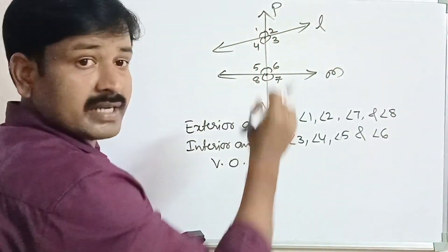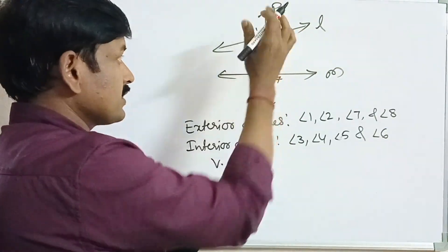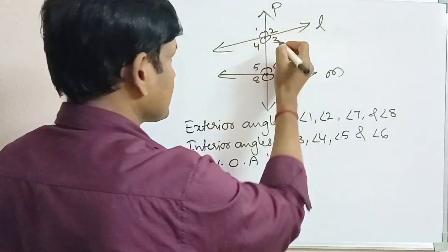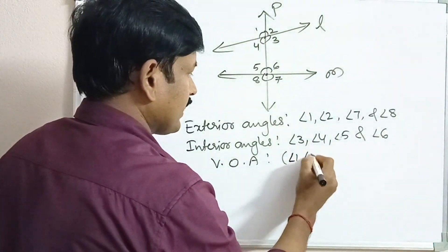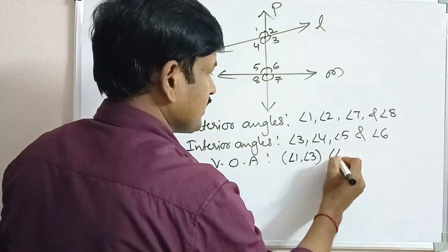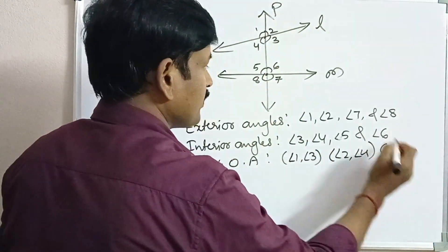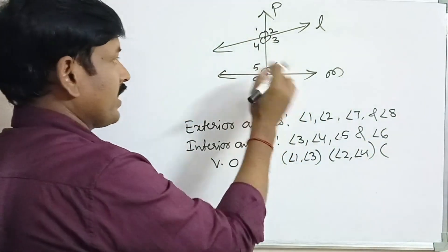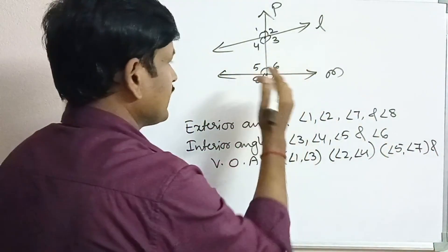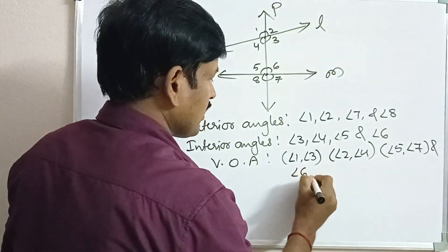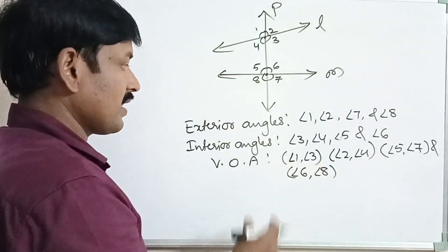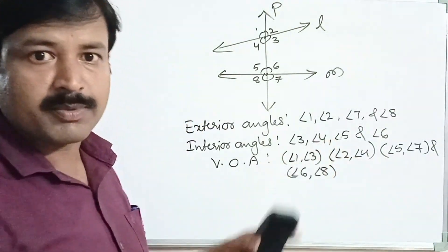Vertically opposite angles: angle 1 and angle 3 are vertically opposite angles, and angle 2 and angle 4 are vertically opposite angles. Let us write the pairs: angle 1 and angle 3, angle 2 and angle 4, angle 5 and angle 7, angle 6 and angle 8. There are a total of four pairs of vertically opposite angles.